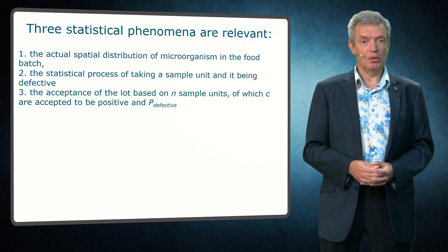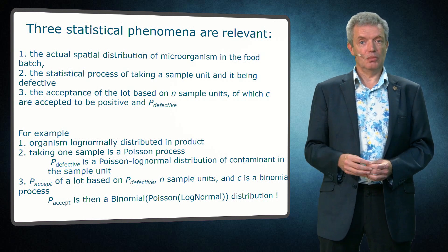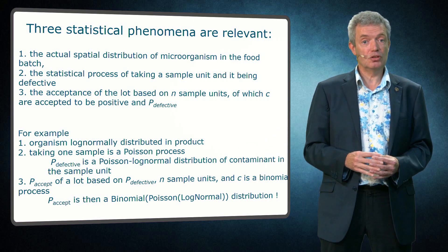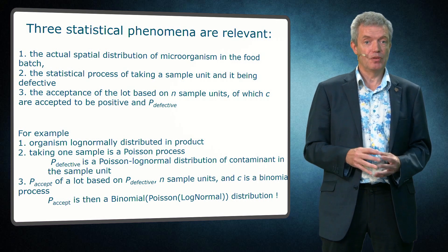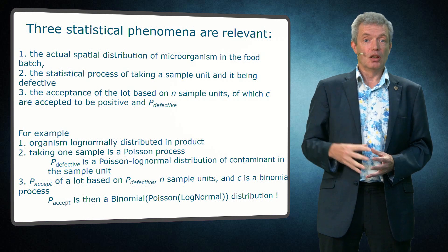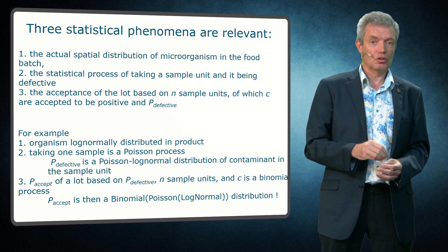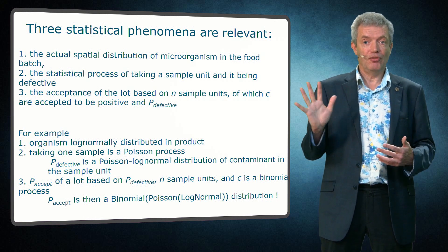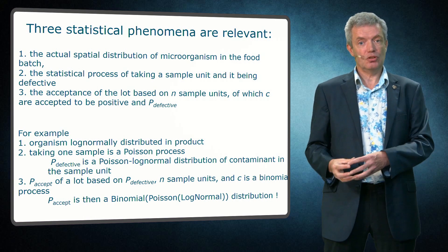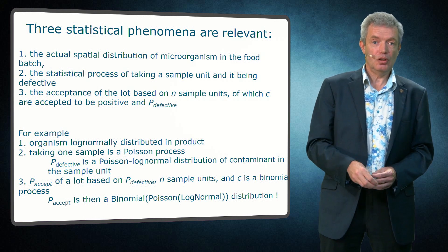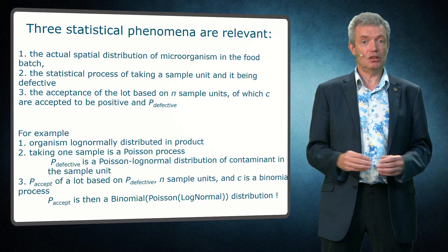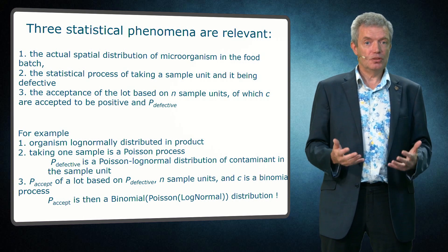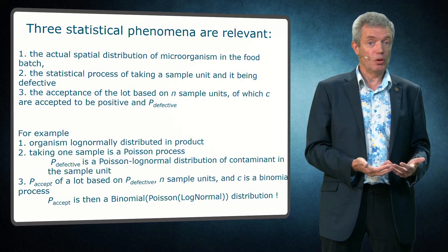So let's look at an example. When the actual distribution of organisms is log-normally distributed in the batch of food, and the whole batch is sampled and tested, a frequency distribution of the number of organism in the batch yields a normal distribution for the log number of organisms. If we take then one sample, which is a Poisson process, the probability of a defective follows the Poisson log-normal distribution. But if I then use a sampling plan with 30 samples of which 0, or 2, or 5 are allowed to be positive, I can calculate the probability of acceptance of the sampling plan with the binomial Poisson log-normal distribution. So the log-normal is the actual distribution, the Poisson is taking the sample and then the binomial is for the overall sampling plan. So these three separate aspects are described by their appropriate statistical function.